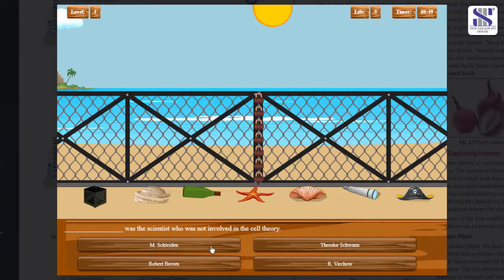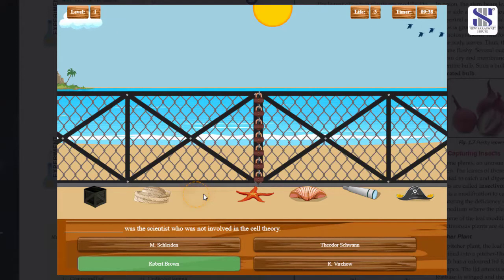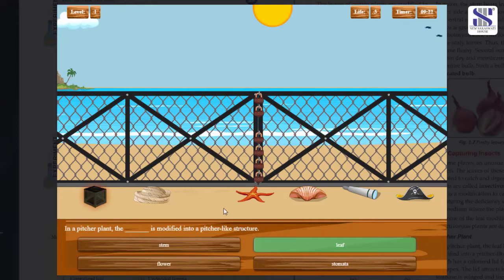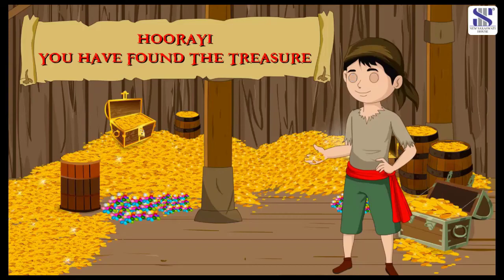Every set of questions increases the level of difficulty as you move on. Simply click on the correct answer. Then click on the glowing clue to unlock the locks. Keep repeating till all the locks are unlocked and you reach the next level, and finally the treasure.